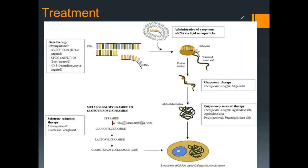The treatment for Fabry's disease is similar in approach to Gaucher's disease. Enzyme replacement therapy includes approved drugs agalsidase alfa and agalsidase beta, with some drugs still in the investigational stage. Chaperone therapy using migalastat is the therapeutic drug being used. Apart from that, research includes gene therapy and substrate reduction therapy similar to Gaucher's disease.